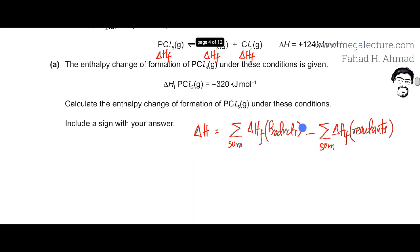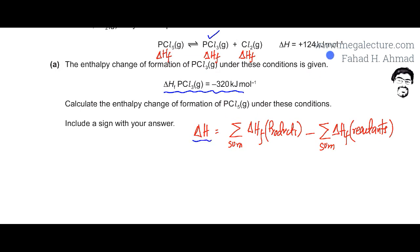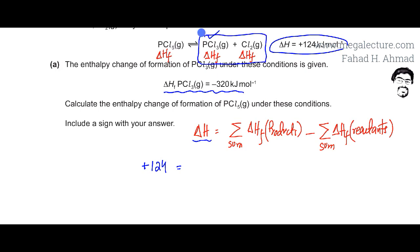The enthalpy of PCl3 is already provided — it is given as minus 320. The enthalpy change which is already known is plus 124. So I am going to sum up the enthalpy of formation of my products: PCl3 is minus 320, plus the enthalpy of formation of Cl2. Remember, the enthalpy of formation of elements is always zero, because elements are already in their formed state.